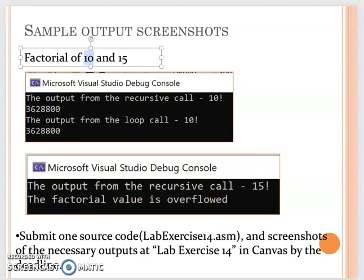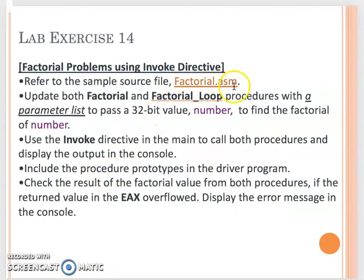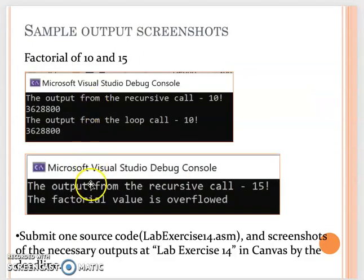That's your example on lab exercise 14. I want you to update from the factorial.asm file and make the change. Here is the sample output you can check.